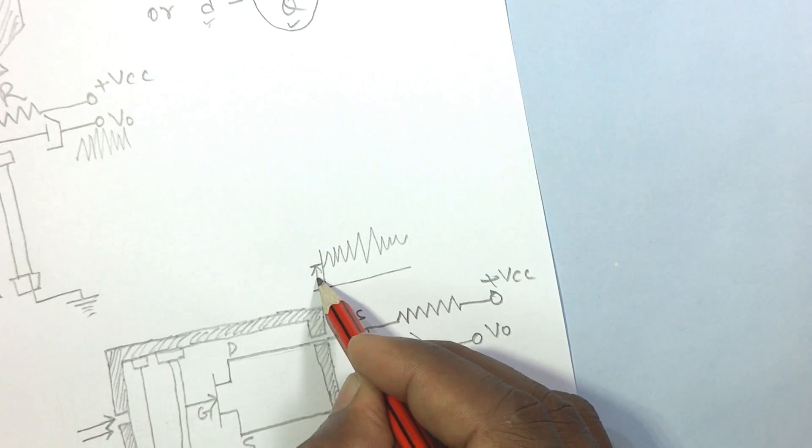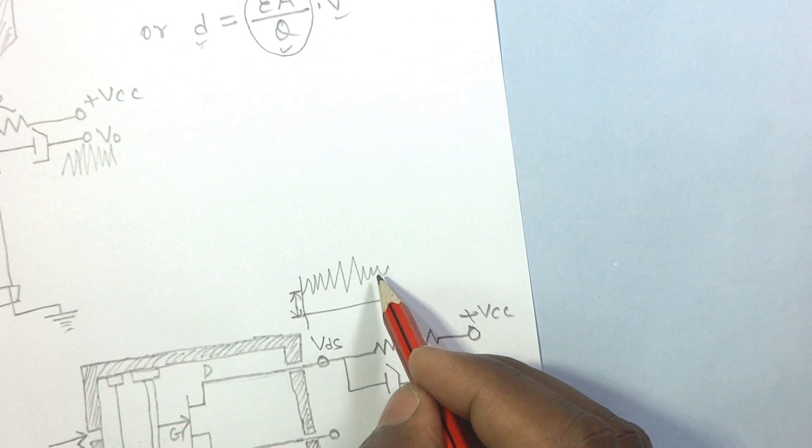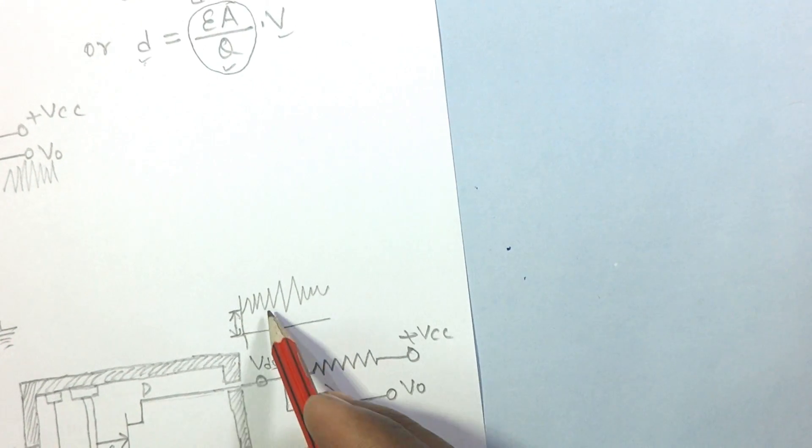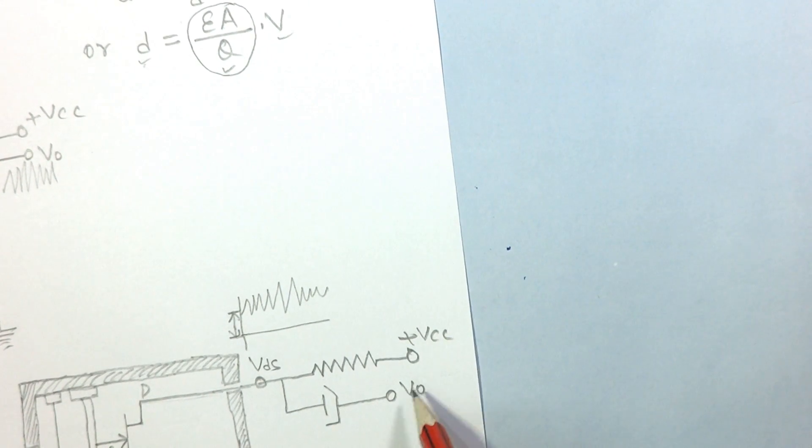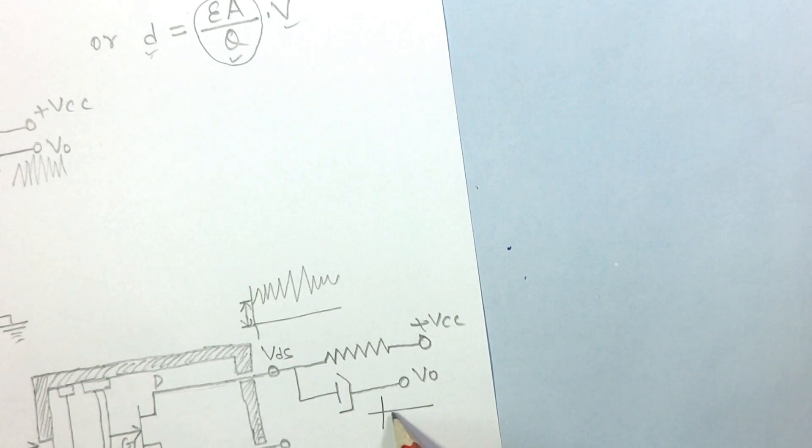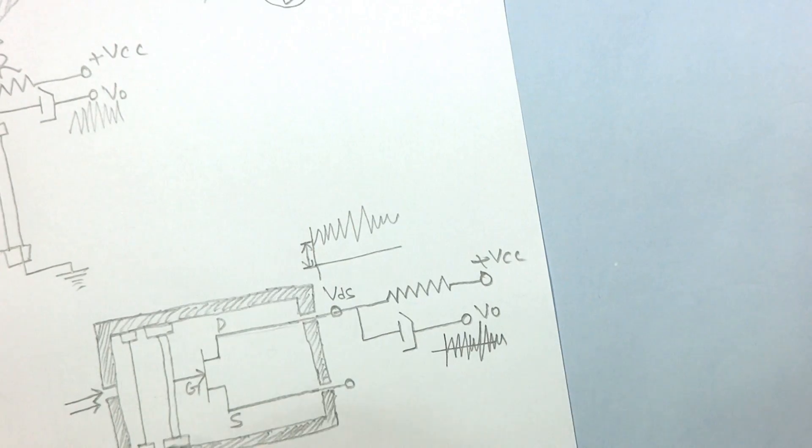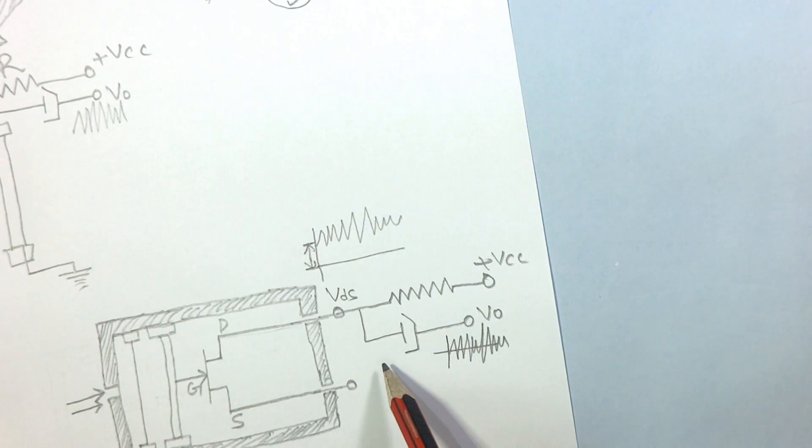This is the DC component and this part is the AC component. We take only the AC component through this coupling capacitor. So output voltage will be like this, and this voltage is given to the signal conditioner circuit for modifications. This was the working principle of the electret microphone.